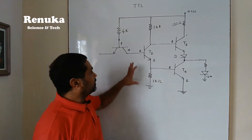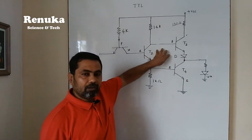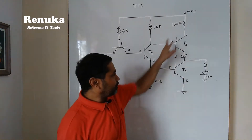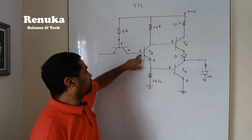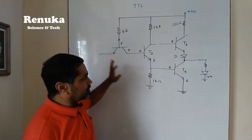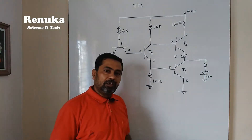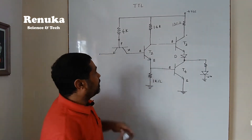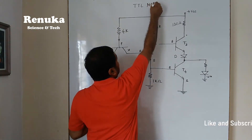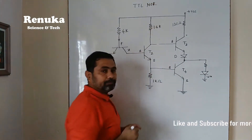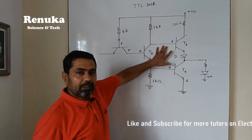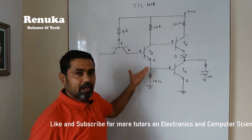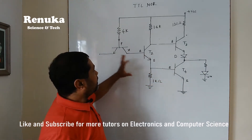This is the basic TTL NOT gate which we have already discussed. This is the basic circuit for totem pole output, again driven by a transistor and this transistor again driven by another transistor. Up to now we have seen TTL NOT gate, we have seen TTL NAND gate also. Now we are going to see how TTL NOR gate is designed. The same basic circuit of TTL inverter is here — only some modifications have to be done and then it will work like a NOR gate.